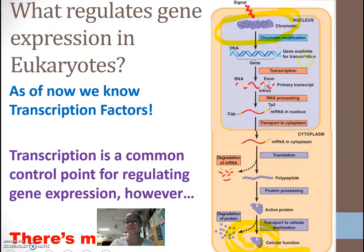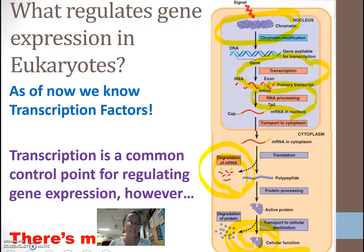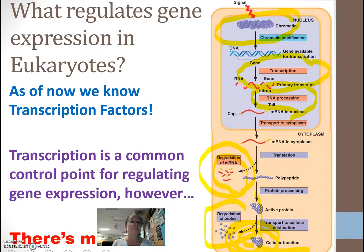At the level of transcription, we can determine whether RNA polymerase will transcribe or not. During RNA processing, we can edit that RNA in different ways to get different kinds of proteins, impacting gene expression. Once mRNA is in the cytoplasm, we can change the rate of mRNA degradation — RNA can exist for a few days, a few weeks, or up to a few months depending on hydrolytic enzymes. And if we do make a polypeptide, we can also send a signal to degrade that protein, preventing a final protein product.